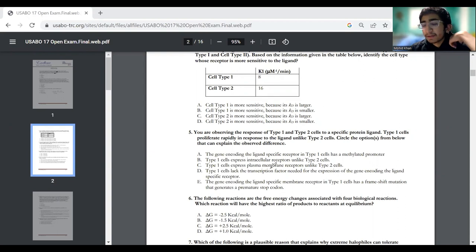Generally speaking, if something is methylated, that kind of silences it. I think in Campbell biology towards chapters 18, 19, or 20, methylation is something that silences a gene. So methylating type one cells would be incorrect because they proliferate a lot more faster than type two cells. Type one cells express intracellular receptors, unlike type two cells. Well, if type one cells have intracellular receptors, they would actually proliferate much more slower because it would take time for everything to get to the nucleus.